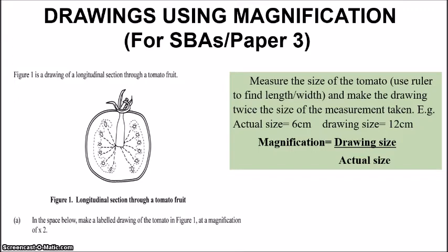So you can find the length, or the width, or sometimes you can actually just measure it diagonally. So that would give you a better idea of the size. And then you're going to make your drawing twice the size. So that's what times 2 means. So twice the size of the measurement taken. For instance, if I measure the actual drawing and it comes out to be 6 centimeters, then you want to make sure the drawing you made is twice that size. So that would be 12 centimeters. And I have the formula here for working out magnification. So magnification equals drawing size over the actual size.